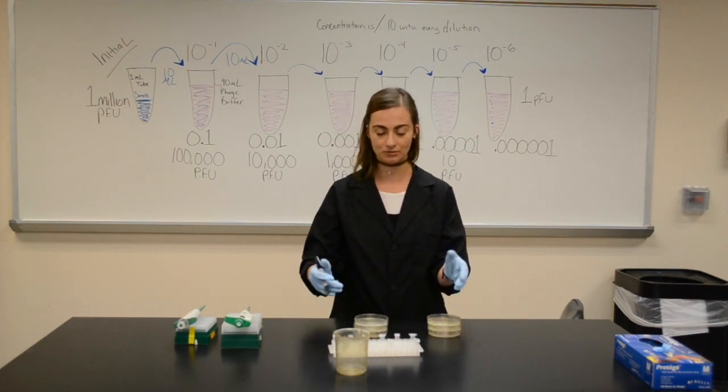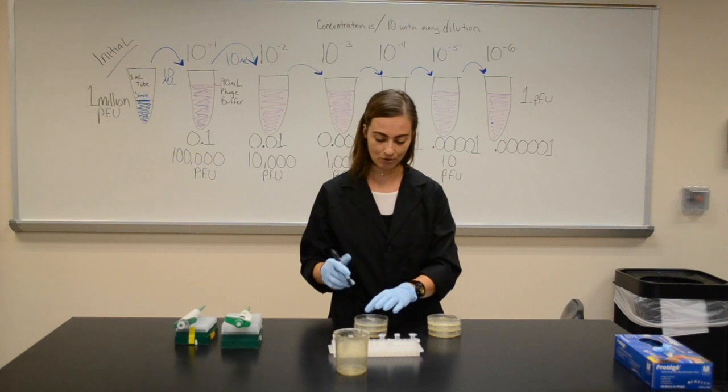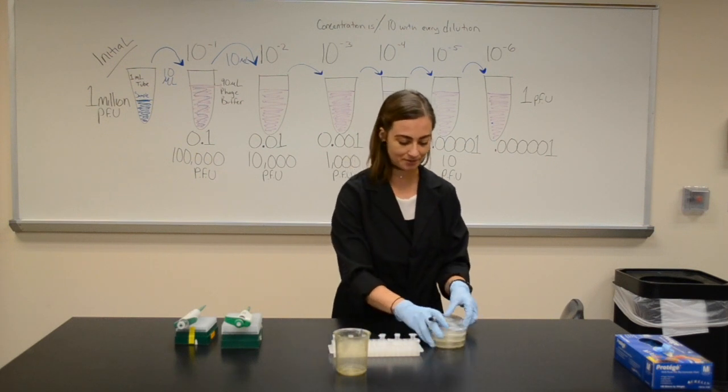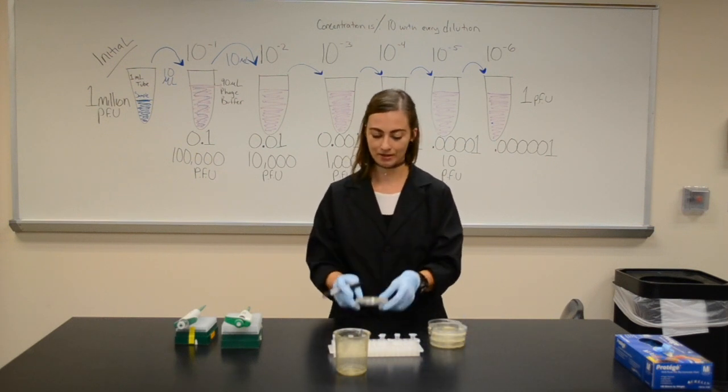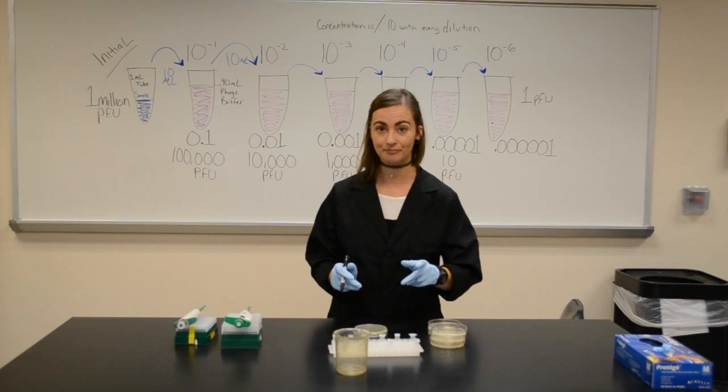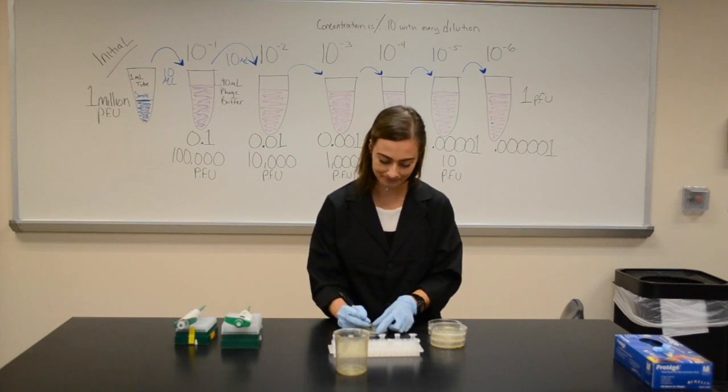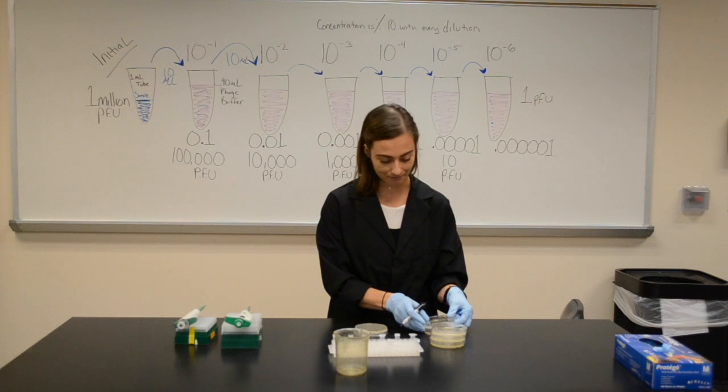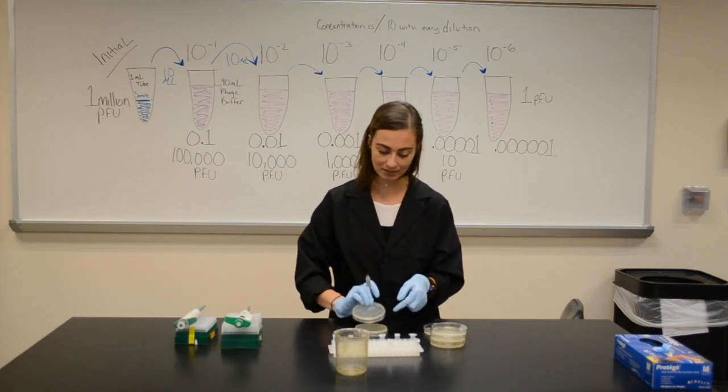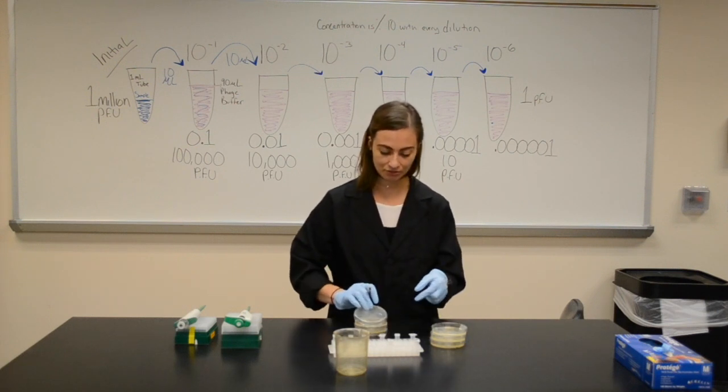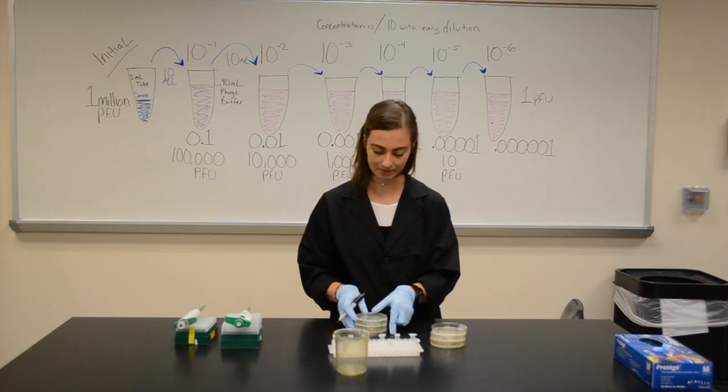I'm going to have six plates out for my dilutions since I'm doing six dilutions, and I'm going to label each of my plates. I'm going to label with my initials, with today's date, and with what dilution it is. So I have 10 to the minus 1 with my name and the date, 10 to the minus 2, 10 to minus 3, minus 4, 5, and 6.